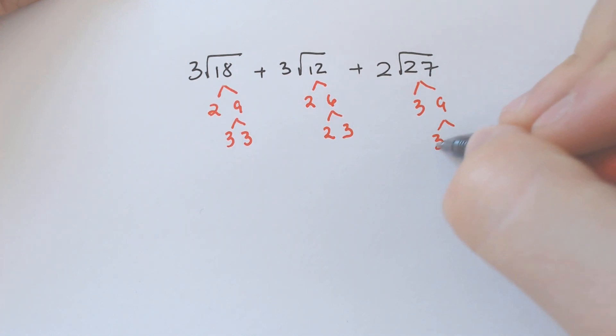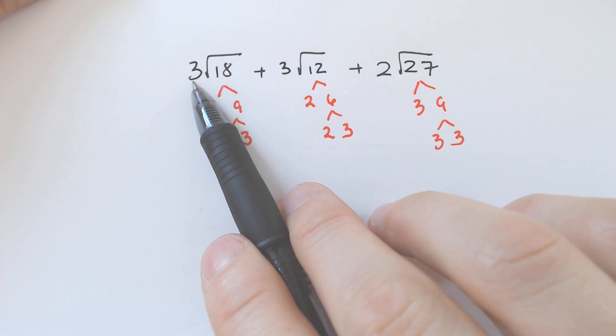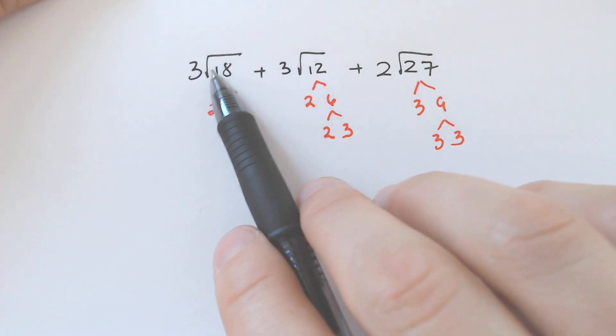Divide by 3, divide by 3. All right. Again, we're looking for 2 of a kind. It doesn't matter what number is on the outside unless it's that root. If it was a cube root, then I'd be looking for 3 of a kind. This is still a square root.